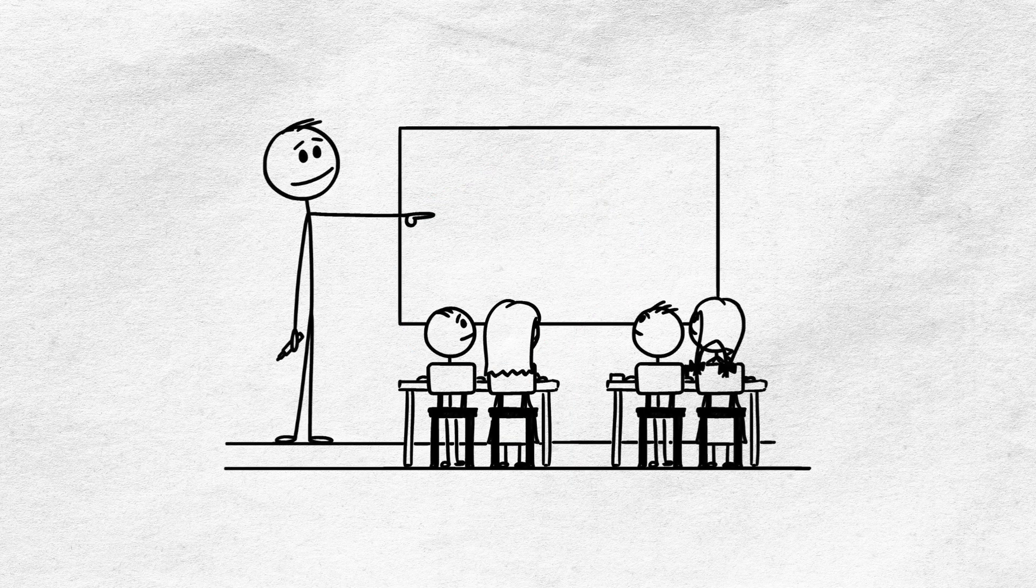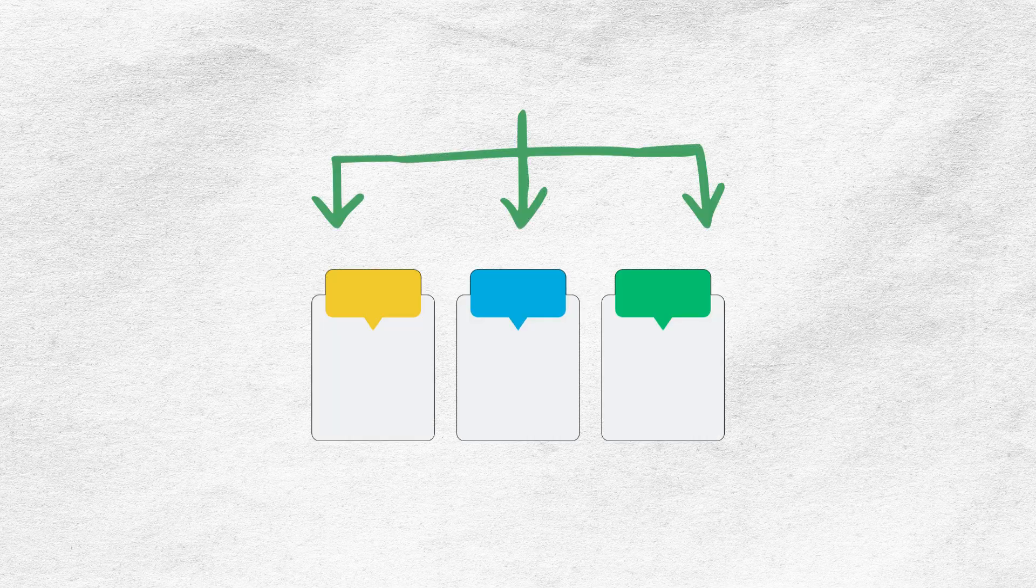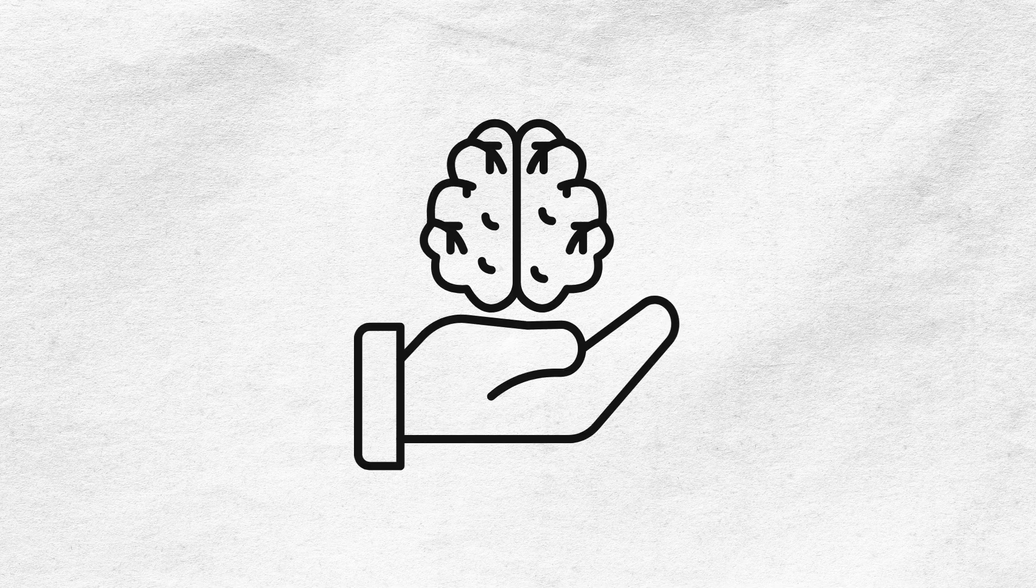Verbalize what you're learning. Pretend you're teaching it to a 10-year-old. Explaining boosts dopamine through mastery. Switch formats. Use diagrams, mind maps, videos, practice questions. Variety keeps your brain engaged.